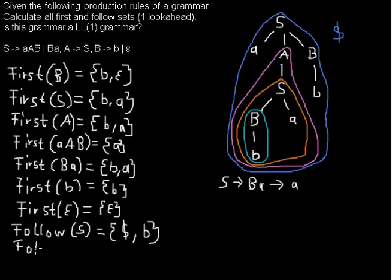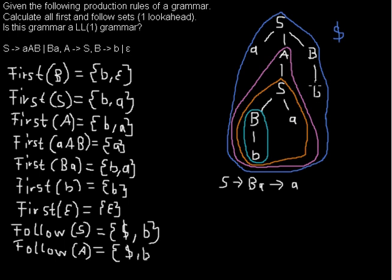Now I want to calculate the Follow set of A. Because of the chain rule, everything that follows S also follows A. Well, actually it's the other way around — everything that follows A also follows S. But as you can see here, in this case it's the same: A can be followed by small b, because in this rule you have capital B following A. Or, if B derives to epsilon, then you will have the word-end sign after A.